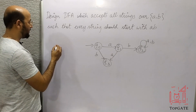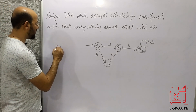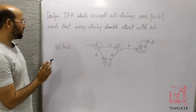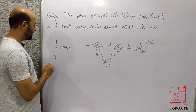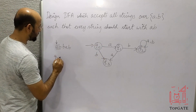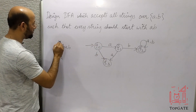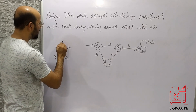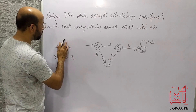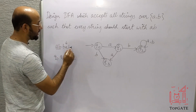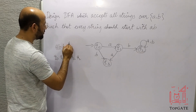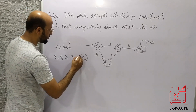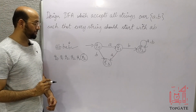Let's verify with a correct string: 'abbab'. Starting at q0 — 'a' applied, go to q1; 'b' applied, go to q2 (final); 'b' applied, stay at q2; 'a' applied, stay at q2; 'b' applied, stay at q2. We end at q2 which is the final state, so this string is accepted.